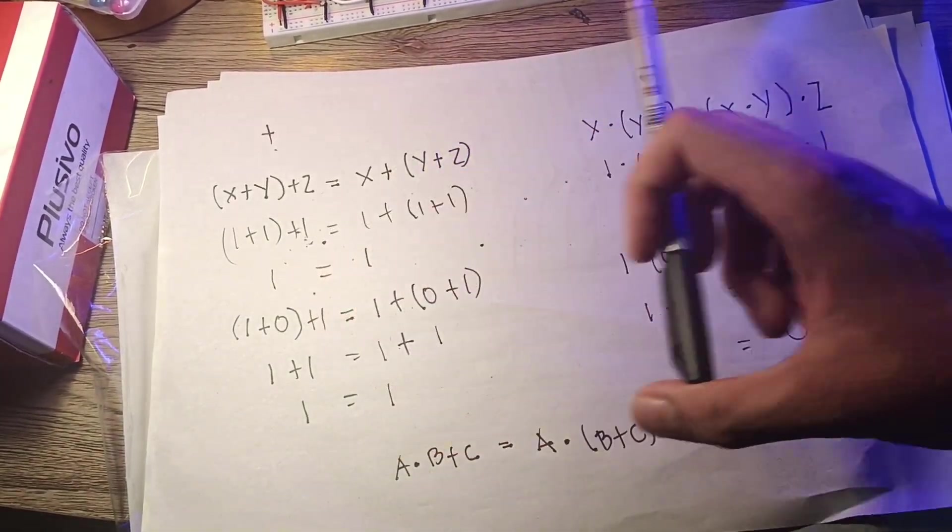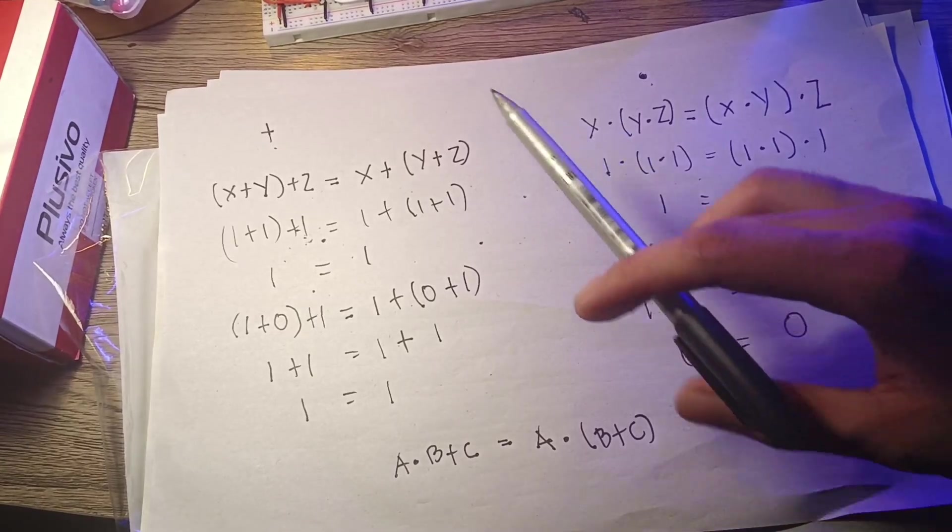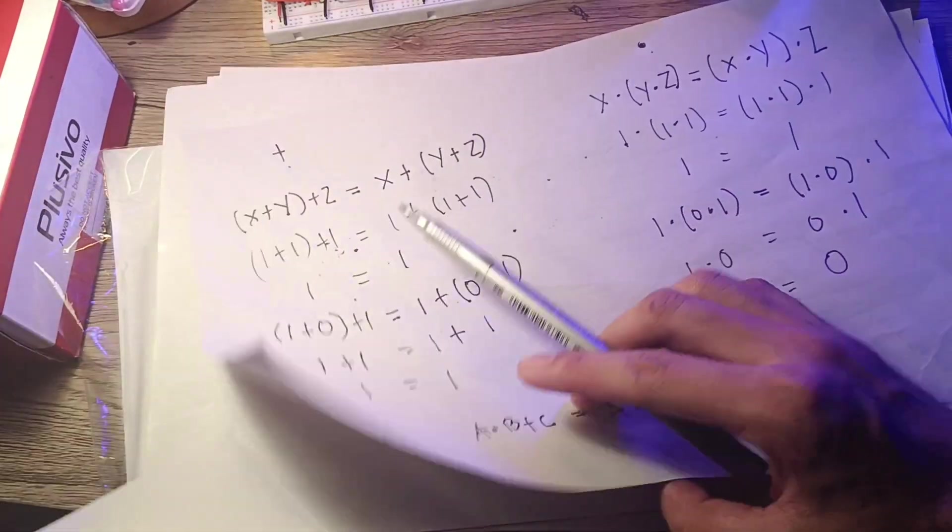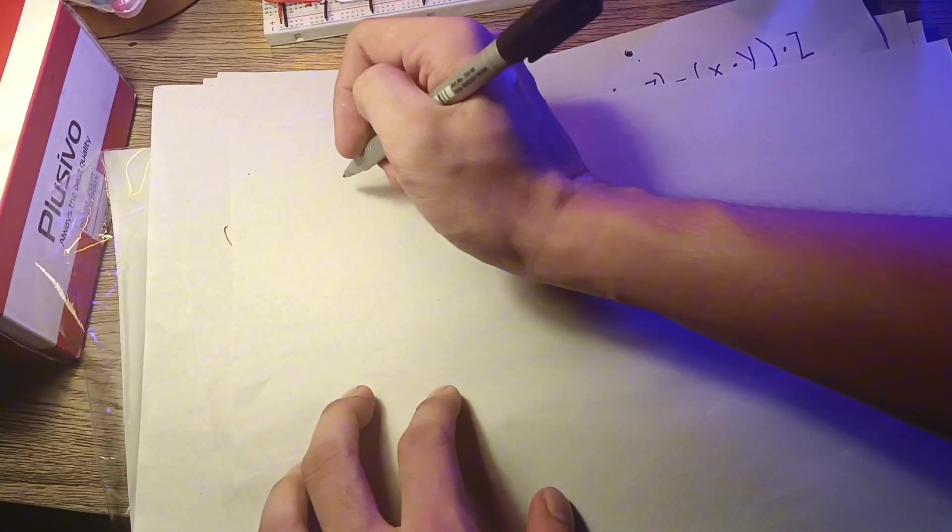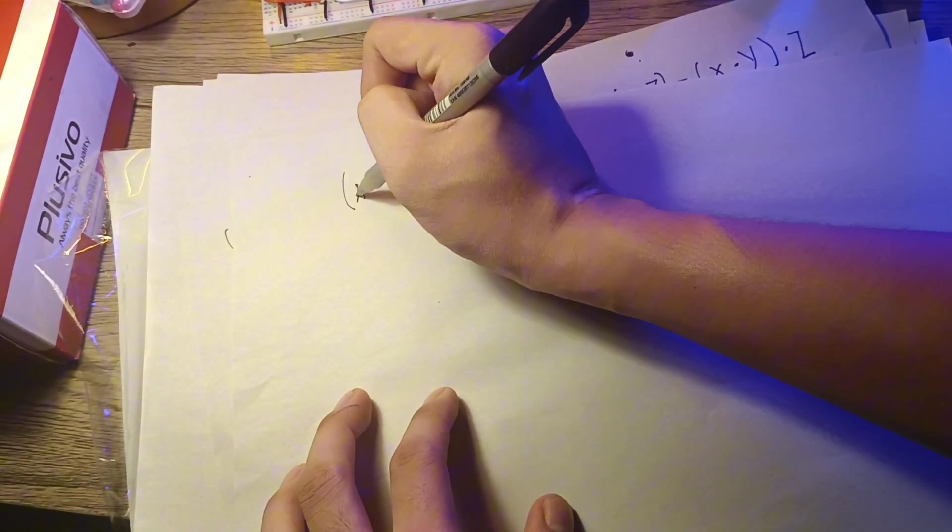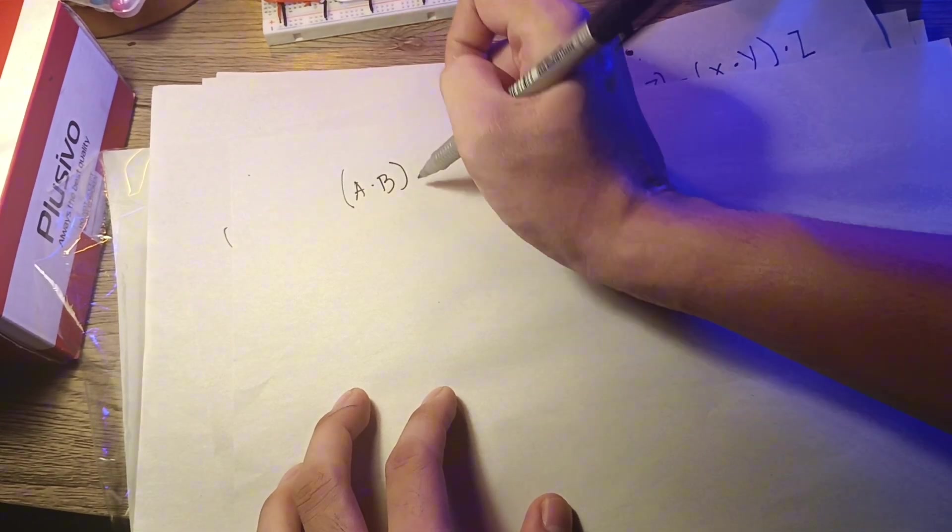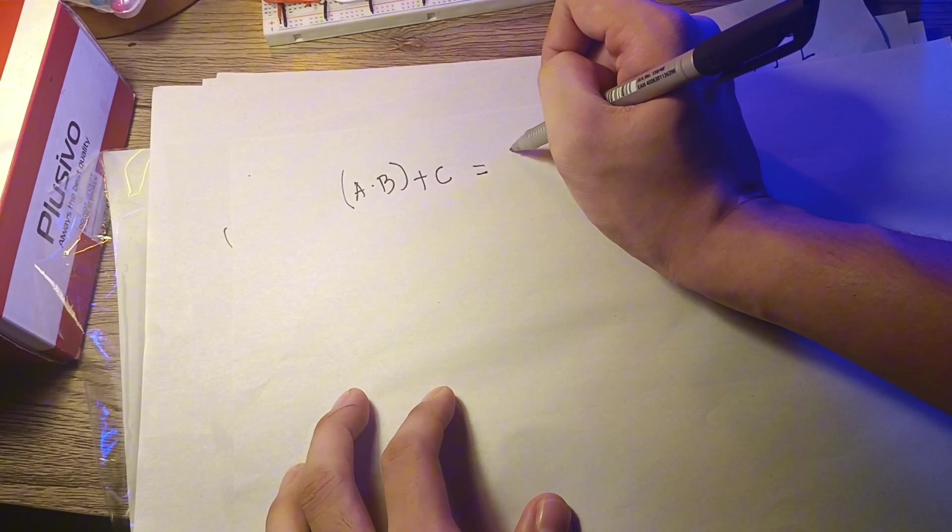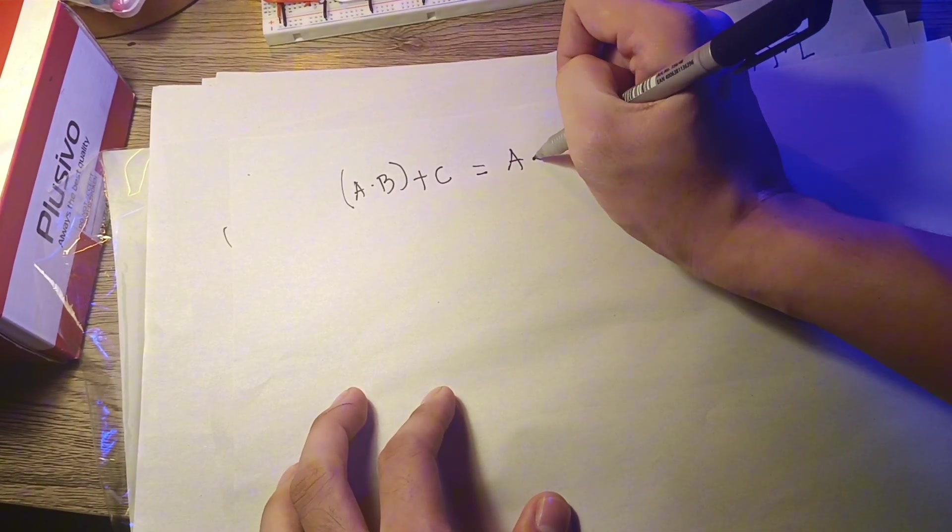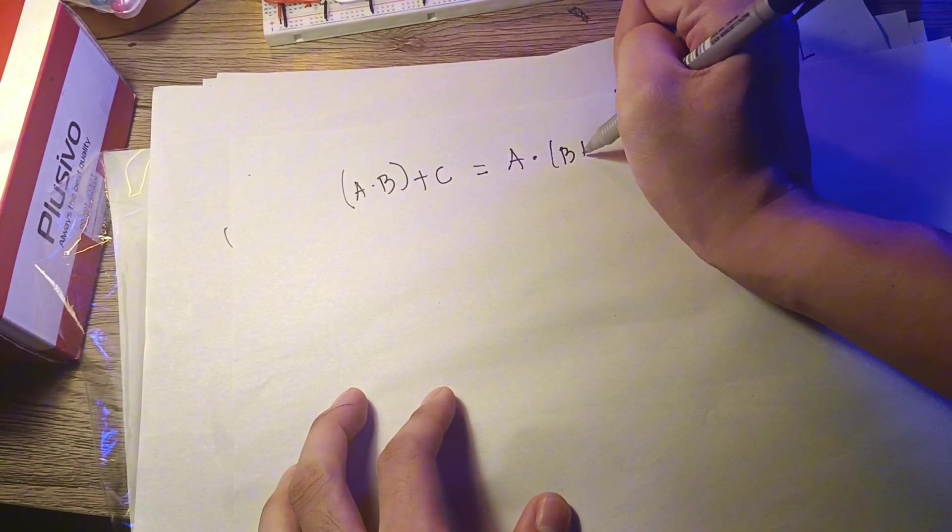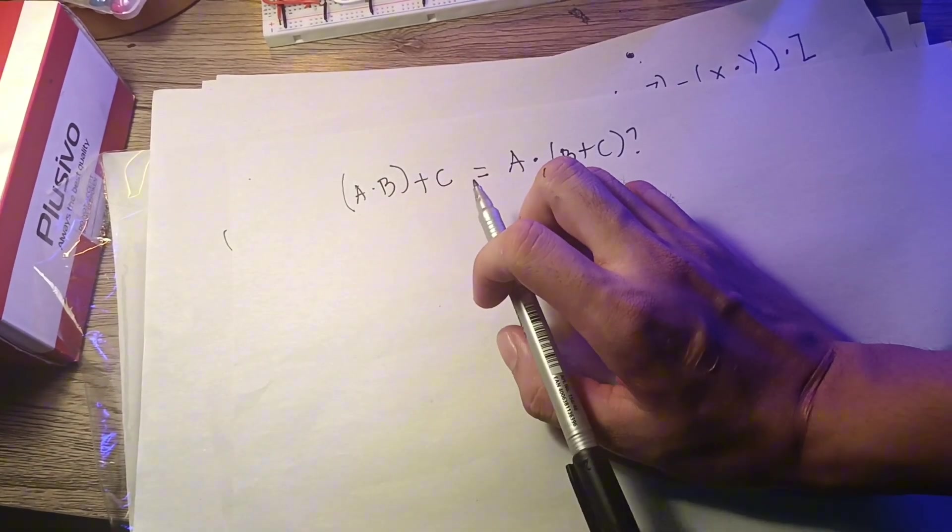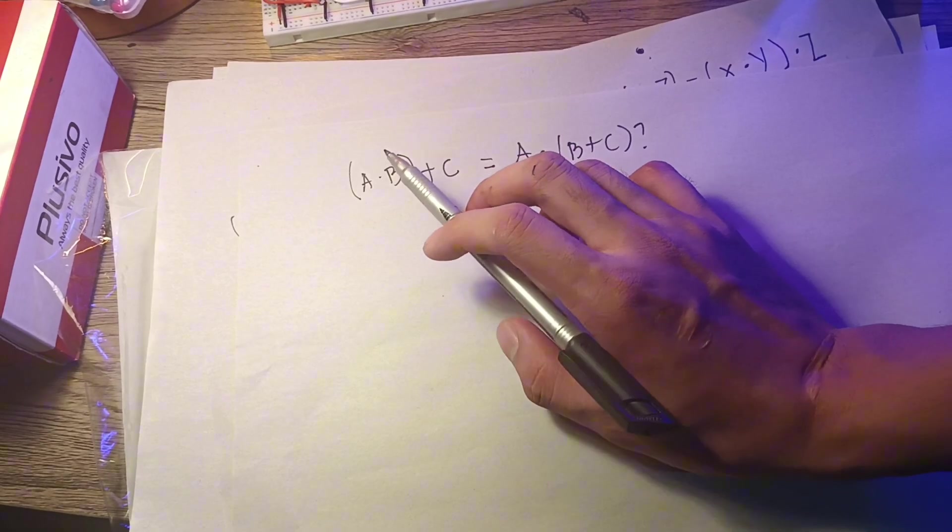Note that while either the addition and the multiplication can be used freely, the two cannot be mixed without ambiguity in the absence of further rules. For instance, thus A times B parenthesis plus C is not equal to A times parenthesis B plus C. The two form different values.